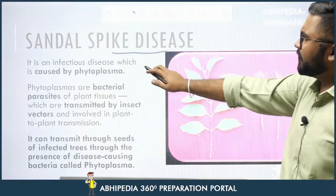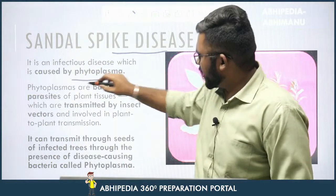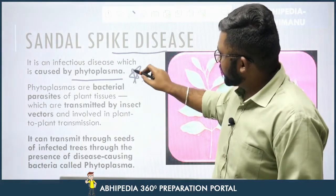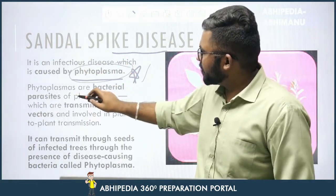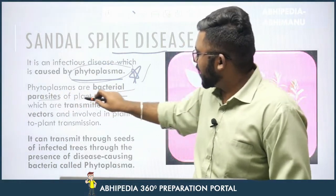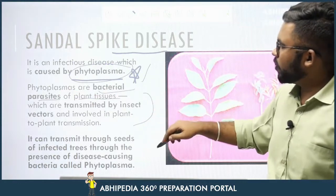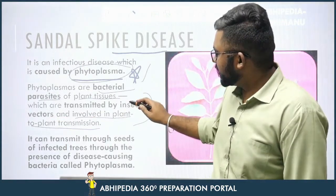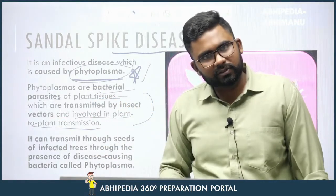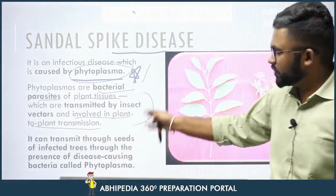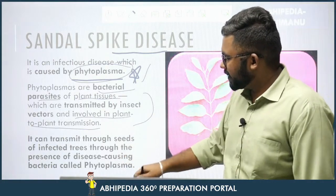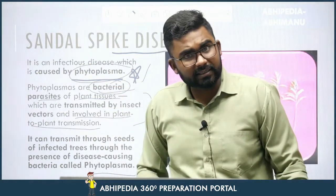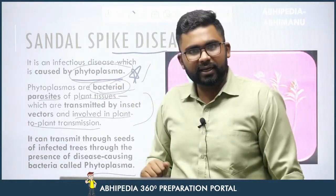Sandal Spike Disease is an infectious disease caused by phytoplasma. Phytoplasmas are bacterial parasites of plant tissues which are transmitted by insect vectors and are involved in plant-to-plant transmission. It can also transmit through seeds of infected trees through the presence of these disease-causing bacteria called phytoplasma. This is important — it is a bacterial parasite.